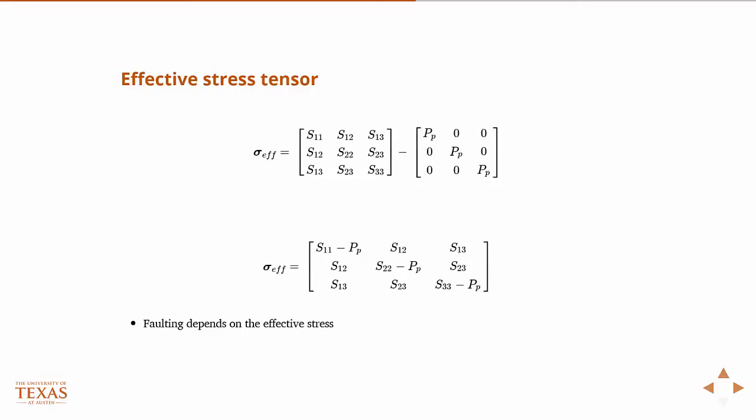And so the way it acts on the stress tensor is in what we call a hydrostatic sense, meaning it only acts normal in all directions. When we transform the stress tensor into the principal directions where there are no shears, then the stress tensor is just diagonal. Those are the normal stresses.